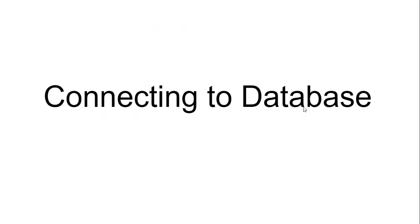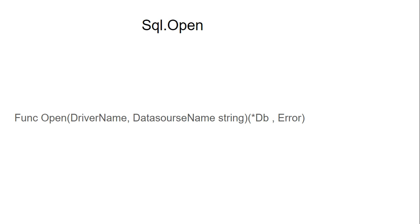In this video I am going to explain how to connect Go to a database. We are using the SQL library for connecting Go to a database using the SQL package. The database/sql package is one of the libraries included in Go. In this SQL package we have the open function, which is used to connect Go to the database.